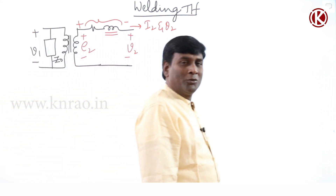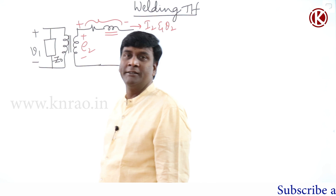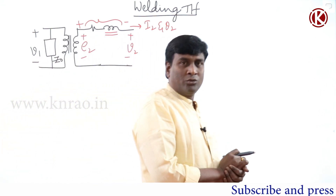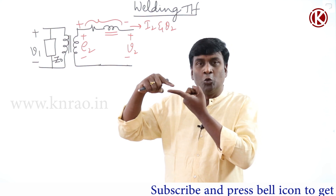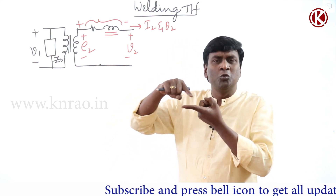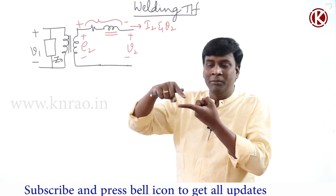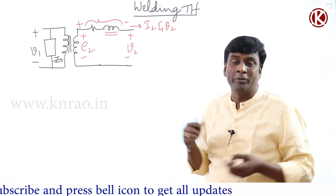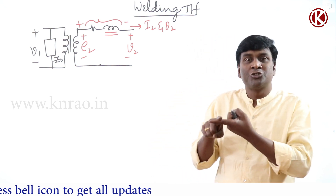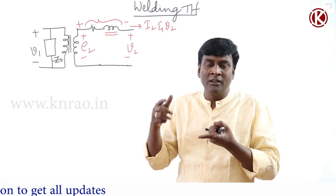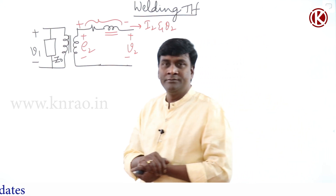From a voltage regulation point of view, leakage should be less. But in some applications leakage may have to be tremendously high — for example, in a welding transformer. In welding, a two to three mm gap must be maintained between the electrodes. No operator can maintain that gap precisely; it will repeatedly short circuit and open circuit, so the welding transformer must be designed to handle short circuit conditions.